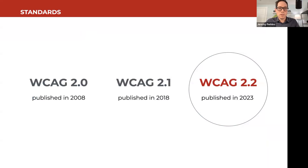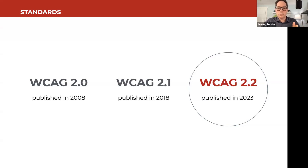WCAG has been in development for over 20 years. Version 2.0 was published in 2008; 2.1 was released in 2018; and 2.2 was released just this past October. These all build on one another — each minor version adds a few new success criteria in response to technology trends such as mobile. They are cumulative, and we're on version 2.2 now — that is the one to be looking at.